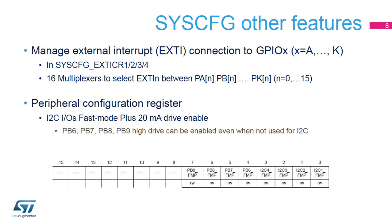The System Configuration Controller manages the selection of the GPIO to the external interrupt or event signal, which is used as an asynchronous external interrupt or event with wake-up-from-stop capability. It also contains the I2C I/O Fast Mode Plus 20mA drive-enable control bits. Four I/Os can be configured in high-drive mode, even if they are not used as I2C alternate functions. They can be used to drive LEDs, for instance.